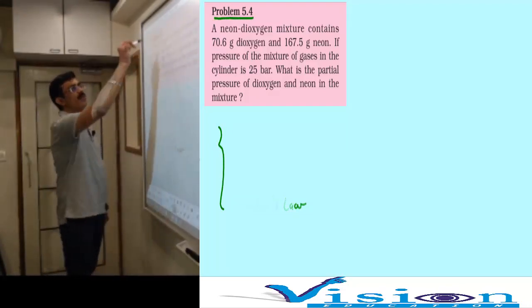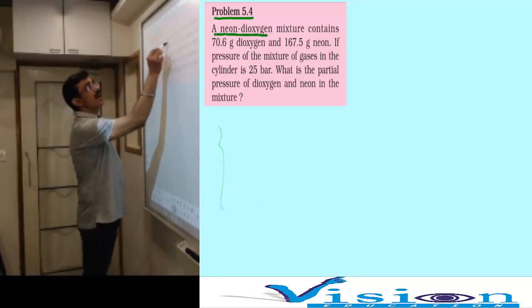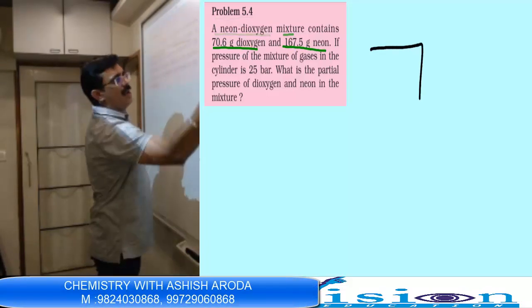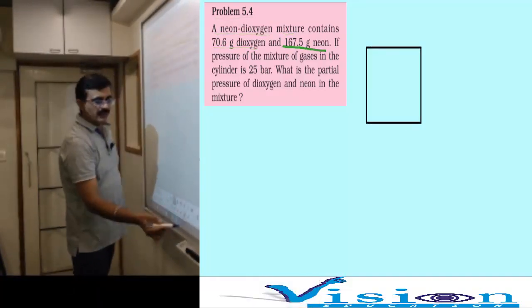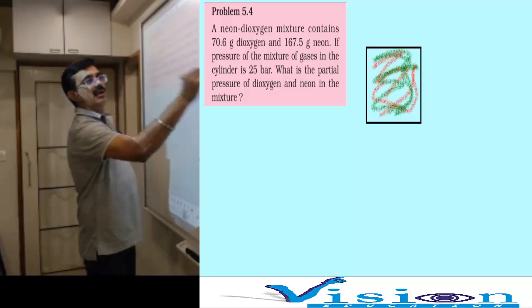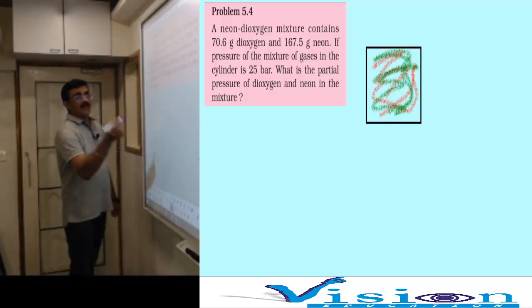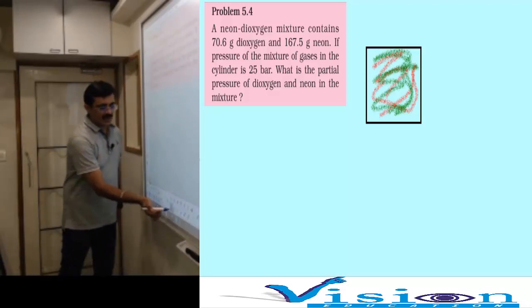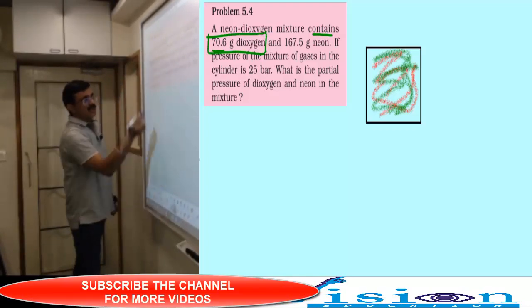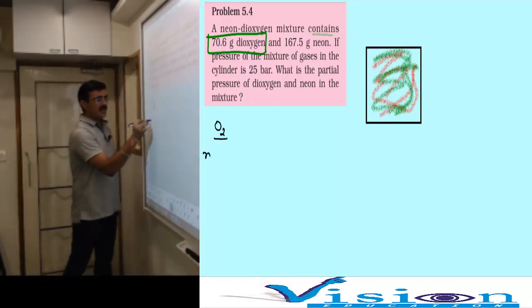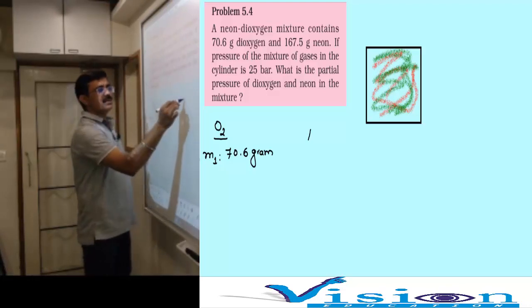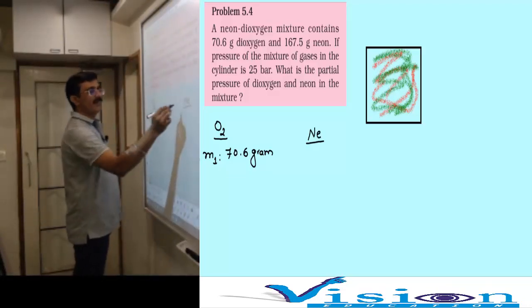The first question is problem number 5.4 from your textbook. It says a neon-dioxygen mixture contains 70.6 gram dioxygen and 167.5 gram neon. Dioxygen can be written as O2, this is gas one, with mass m1 equals 70.6 gram. The second gas is neon with mass m2 equals 167.5 gram.